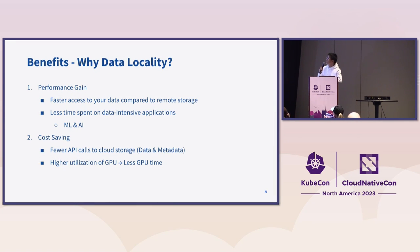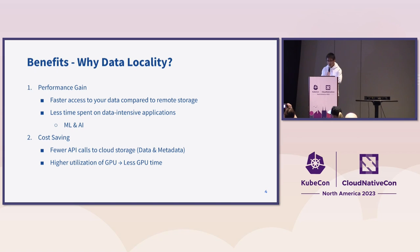About the advantages of bringing data locality to cloud, there are two main reasons. The first is performance gain. Compared to remote storage like S3, Azure, or GCP, you have faster access to the data, so there will be less time spent on data-intensive applications, especially machine learning and AI workloads. The second main reason is cost saving, because by reading from cache there will be fewer API costs made to cloud storage — both data and metadata API costs — and higher GPU utilization also leads to less cost.